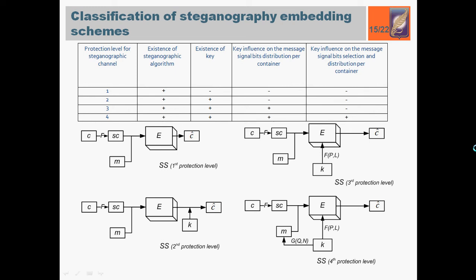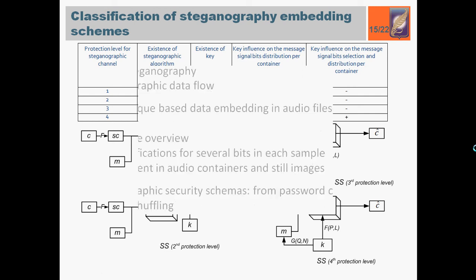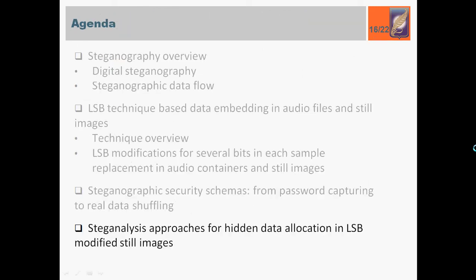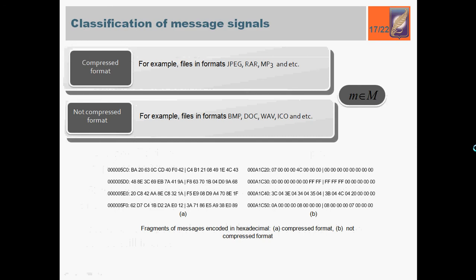The last section is steganalysis. Before analysis of host and modified signal, let's say some words about message signals. In most cases, the type of the message significantly affects the stego resistance. They divide message signal into classes: compressed and not compressed message signals. The not compressed message signals have a chain of the same or similar values as shown in picture B. They can strongly influence the distribution of host signals LSB.